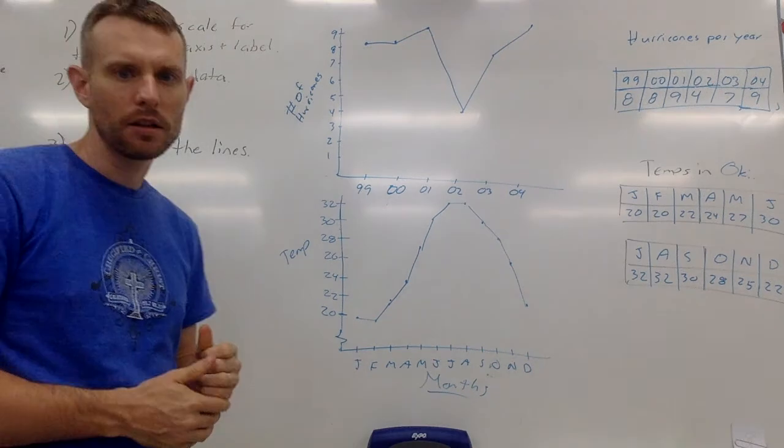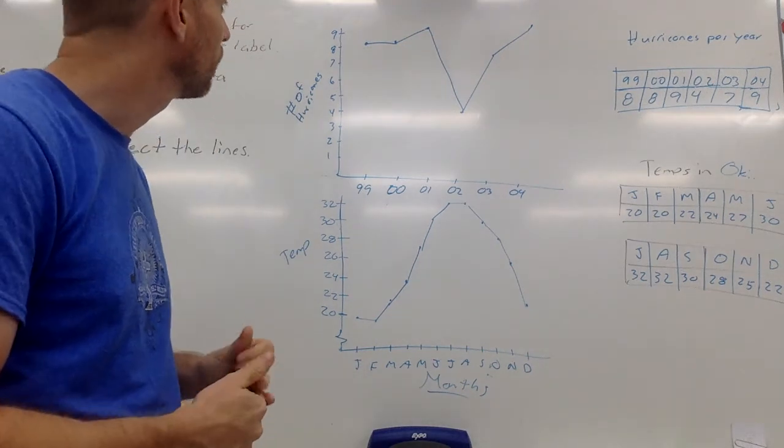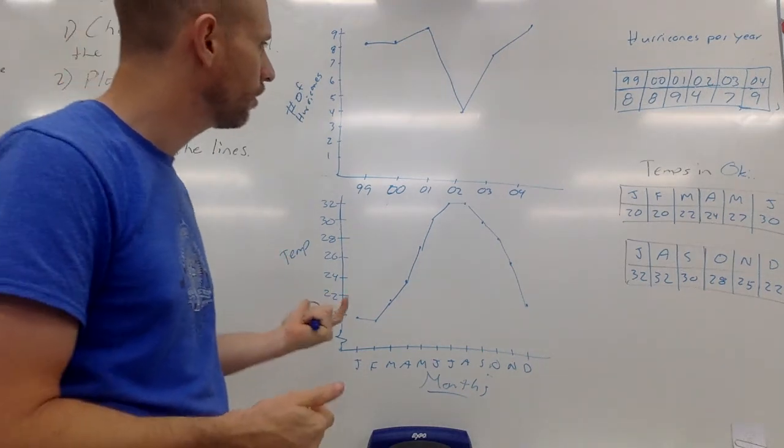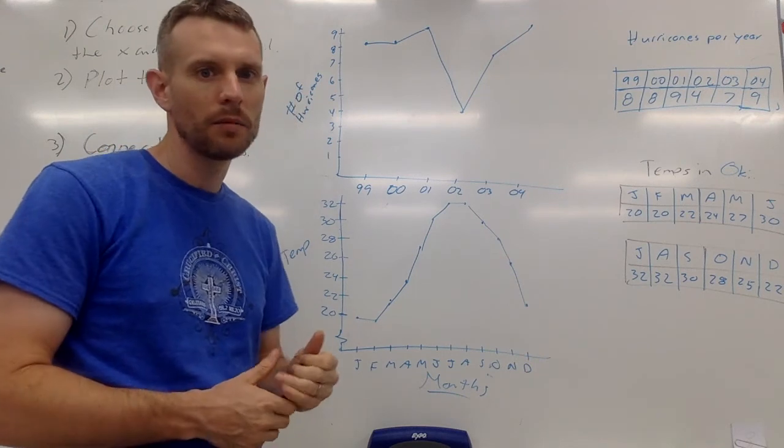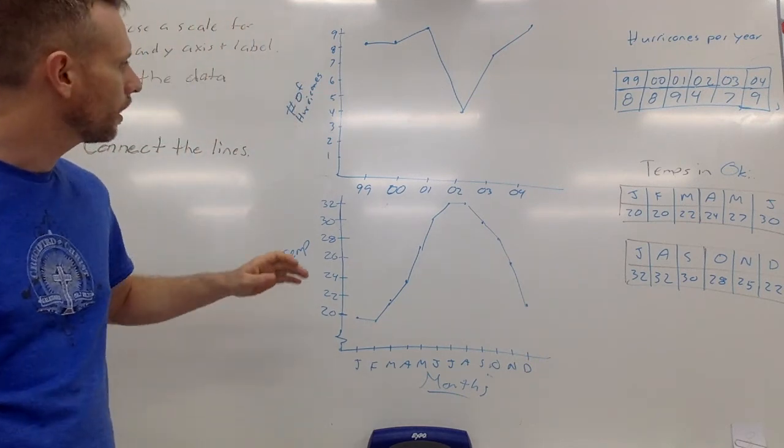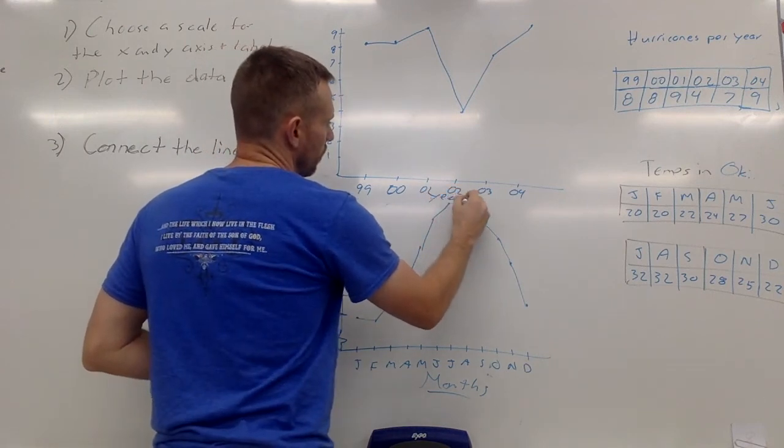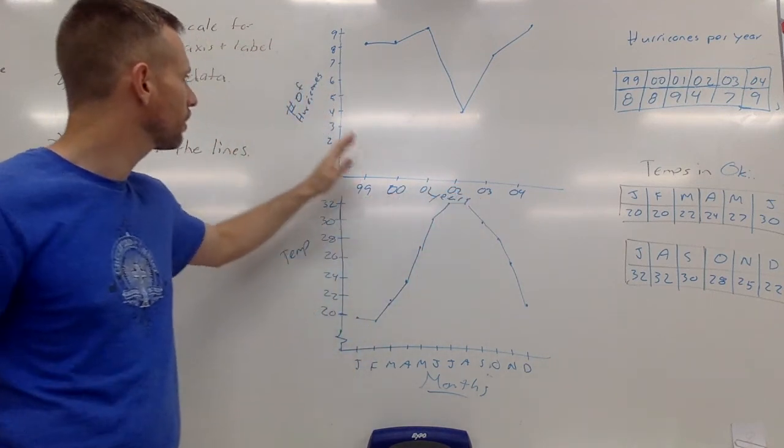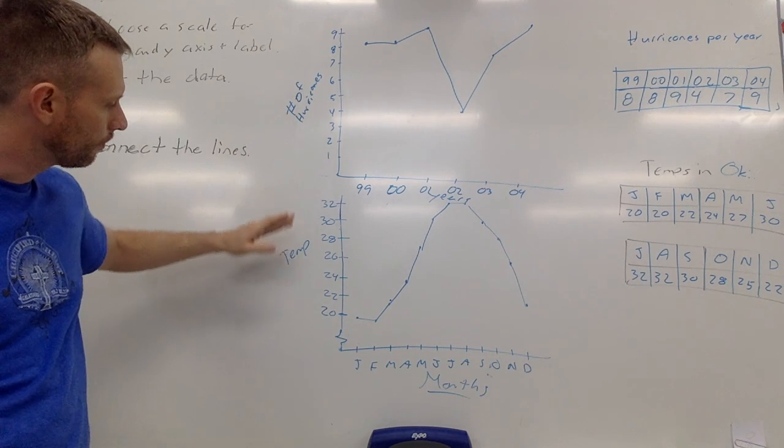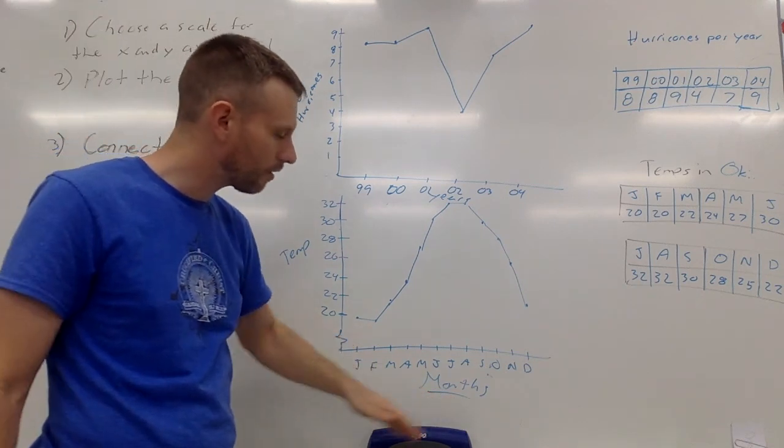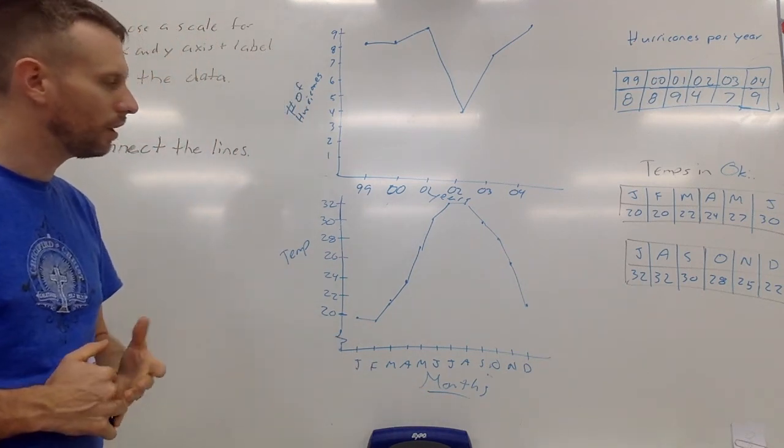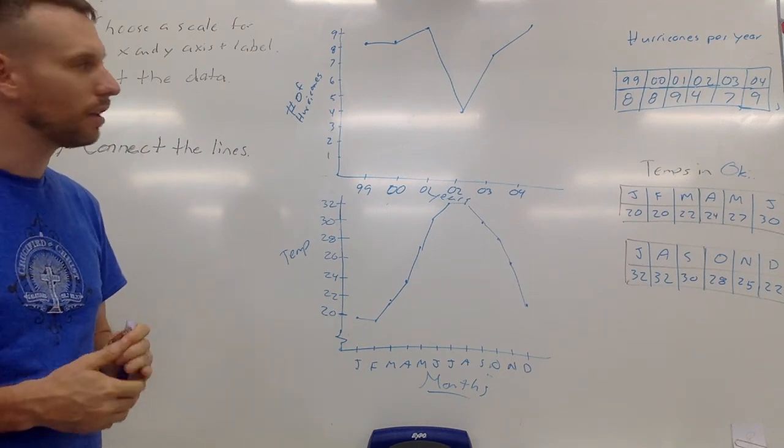So anyway, that's a quick down and dirty how to do line graphs. Again, they are useful for showing change over time. You need to be really careful that you label all of your axes with numbers and the units or whatever it's representing, add a title, and do everything neatly with a ruler. Thank you as always for watching, I'll see you guys next time.